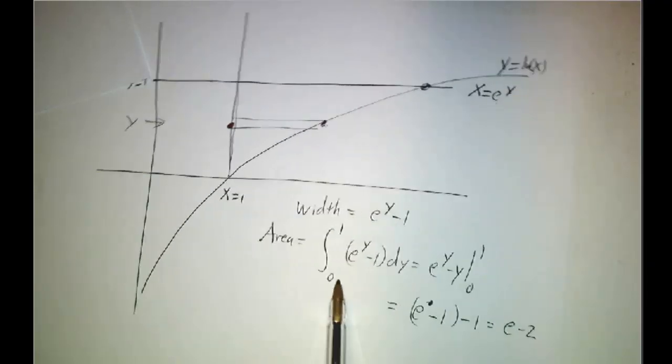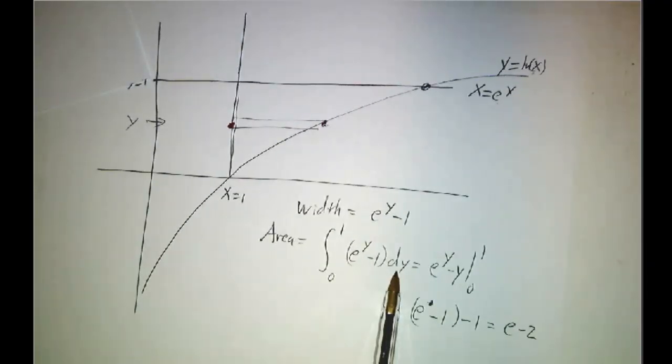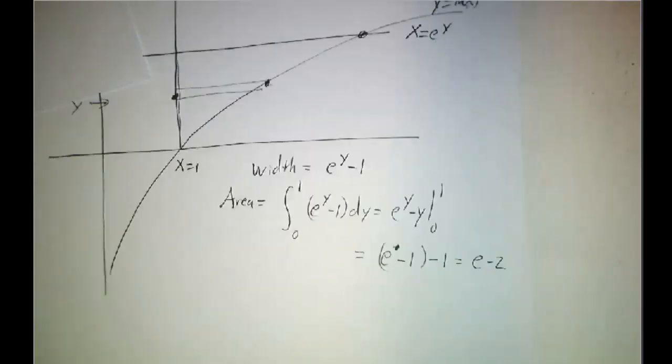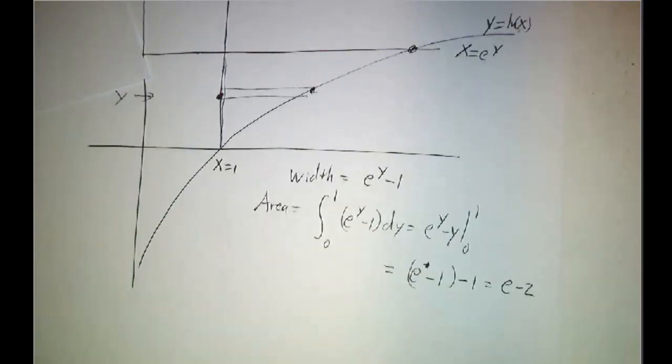So our area is the integral of the width dy. So that's the integral of e to the y minus 1 dy. And that's just e to the y minus y evaluated at 1 and at 0. And that gives you e minus 2. So if you slice horizontally, you get an easy integral. If you slice vertically, you get an integral that you don't know how to do.